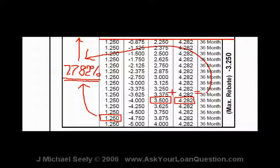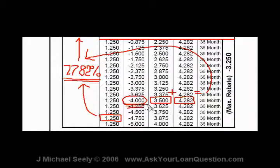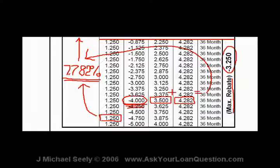Now let's look at the cost rebate — this is the dangerous part. Next to the 3.5% margin, there's a number: minus 4.0. That represents your yield spread premium, or cost, or amount that comes back. That's a significant amount: 4% times a $100,000 loan is $4,000, and on a $300,000 loan that's $12,000. On the right there's also a maximum rebate — in this case 3.25%, which is roughly $3,250 on $100,000 or about $10,000 on a $300,000 loan.